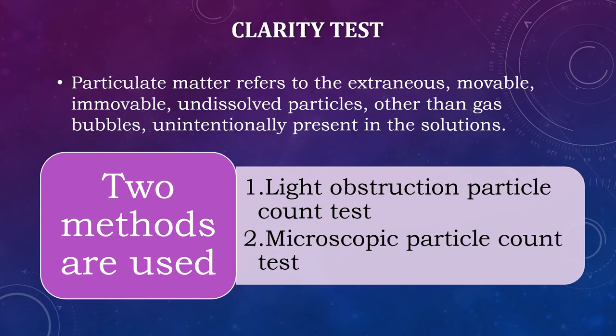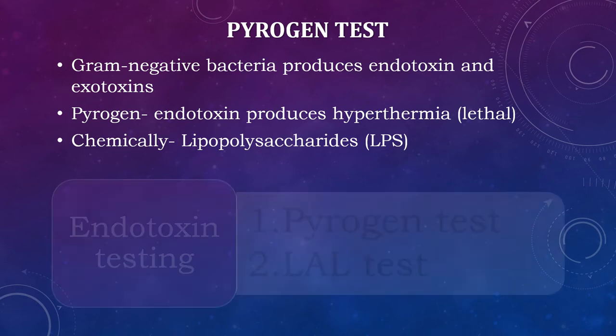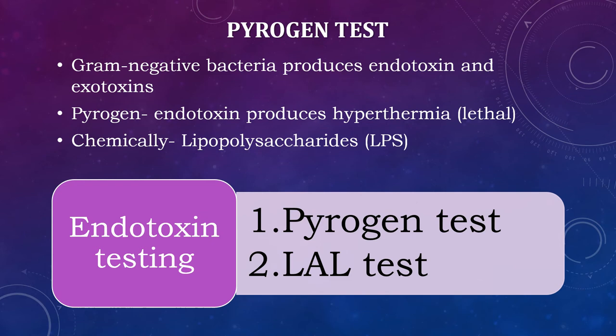Let's see the pyrogen testing. Gram-negative bacteria produce endotoxins and exotoxins, both of which are lethal towards human beings. One of the endotoxins is called a pyrogen, which causes an increase in body temperature, i.e., hyperthermia. Chemically, pyrogen is a lipopolysaccharide. There are two methods to test the presence of endotoxin: one is the pyrogen test and another is the LAL test.